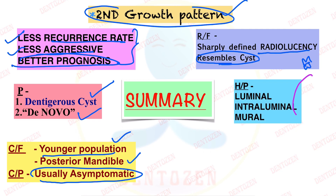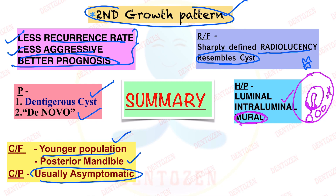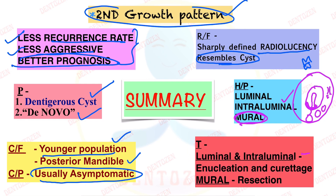Histopathologically, based on where the ameloblastomatous epithelium is proliferating — at the luminal surface (luminal type), extending into the lumen (intraluminal type), or extending into the connective tissue wall as islands or plexiform pattern (mural type) — we classify the three subtypes. Treatment for luminal and intraluminal types is enucleation and curettage; for the mural type, surgical removal or resection similar to conventional Ameloblastoma is done. Long-term follow-up is essential.